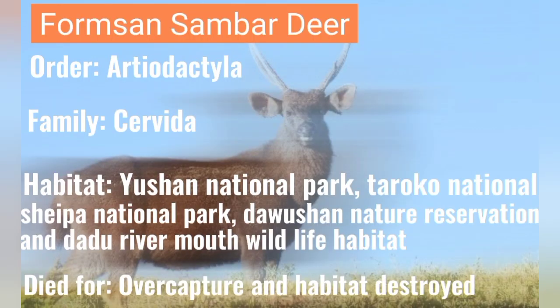Formosan Sambardier — order: Artiodactyla, family: Cervidae. Habitat: Ushia National Park, Taroko National Park, Shipa National Park, the Ushia Nature Reservation, Dada River, and Mount Wildlife habitat. Died due to over-capture and habitat destruction.